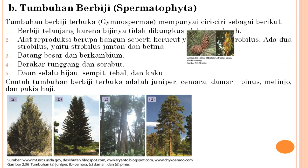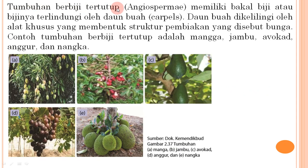Tumbuhan berbiji (Spermatophyta) dibagi dua. Tumbuhan berbiji terbuka (Gymnospermae): berbiji telanjang karena bijinya tidak dibungkus daun buah; alat reproduksi berupa kerucut (strobilus) jantan dan betina; batang besar dan berkambium; berakar tunggang dan serabut; daun selalu hijau, sempit, tebal, dan kaku. Contoh: juniper, cemara, damar, pinus, melinjo, dan pakis haji. Tumbuhan berbiji tertutup (Angiospermae): bakal biji terlindungi oleh daun buah yang dikelilingi alat khusus membentuk bunga. Contoh: mangga, jambu, alpukat, anggur, dan nangka.